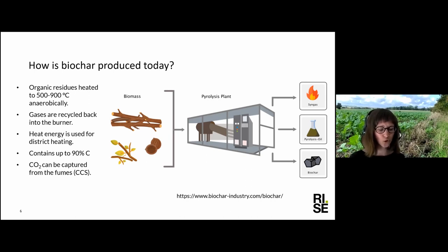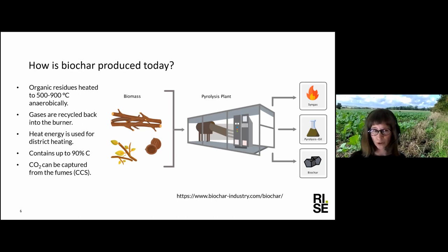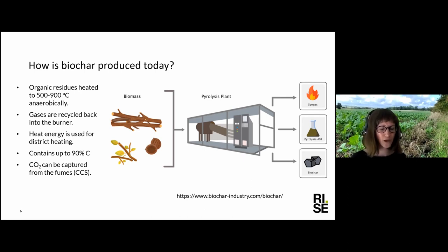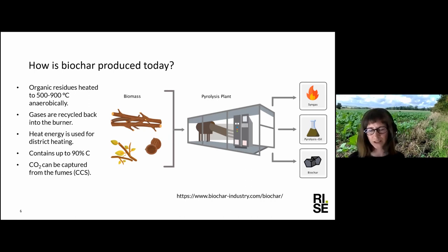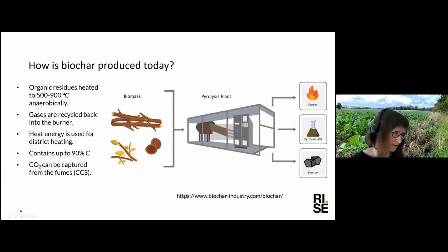Some carbon does go up as CO₂, but the biochar can have a carbon content of up to 90%. The exact content depends on how much oxygen enters the process and how long the material stays in it. There is also a possibility to capture the CO₂ from the fumes — this addition is called CCS, carbon capture and storage — which is spoken about a lot in the media nowadays.